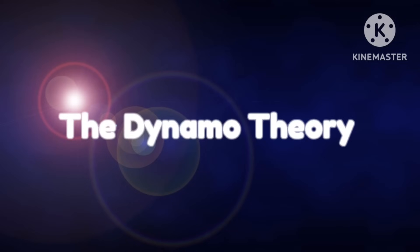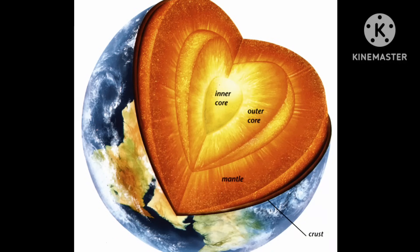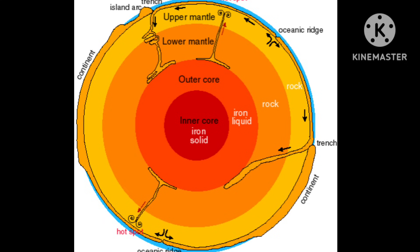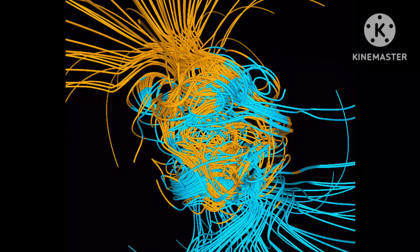The dynamo theory is one of the most widely accepted explanations for how Earth produces its magnetic field. It states that Earth's outer core, rotating, convecting and electrically conductive fluid, can generate and maintain a magnetic field.